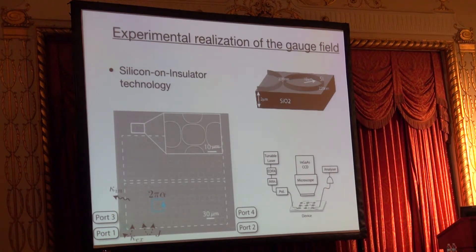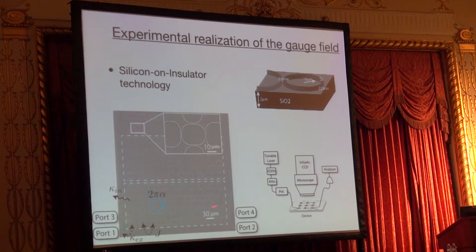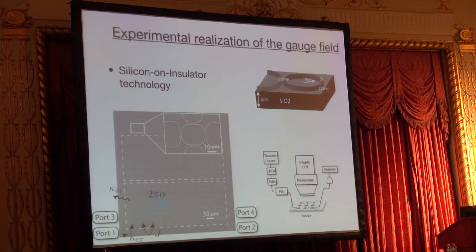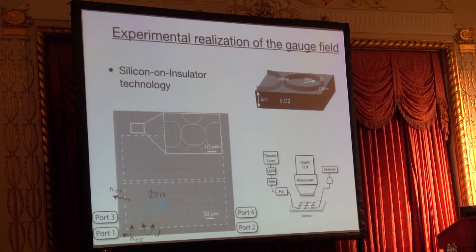We can send a photon inside the system using a coupler. Any resonator has some loss, but the loss here is actually good because it allows us to measure the state of the system. If we have more photons, we scatter more photons out of the resonator, and then we can image the wave function — not the phase, just the amplitude, the magnitude on each site.